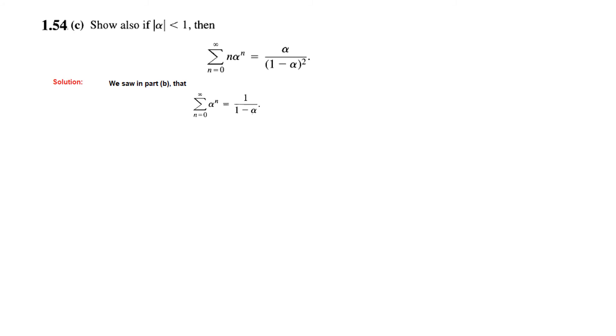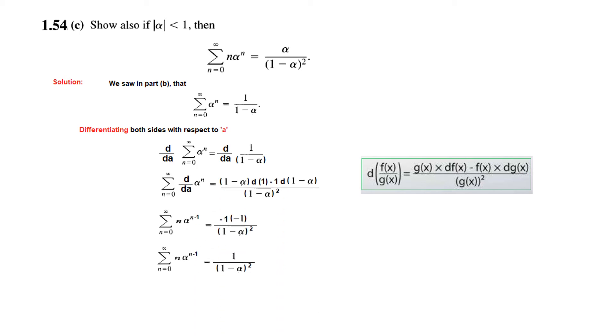Now to get this n, what we need to do is that we have to differentiate both sides. Differentiating both sides with respect to alpha, this is left hand side, and differentiation of the right hand side, and we use this formula, I hope you remember this.